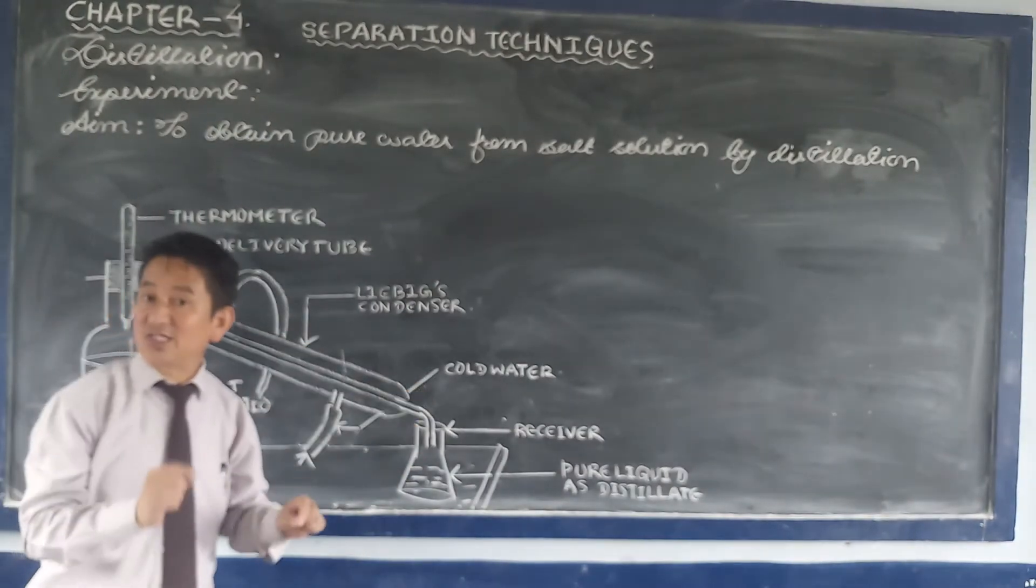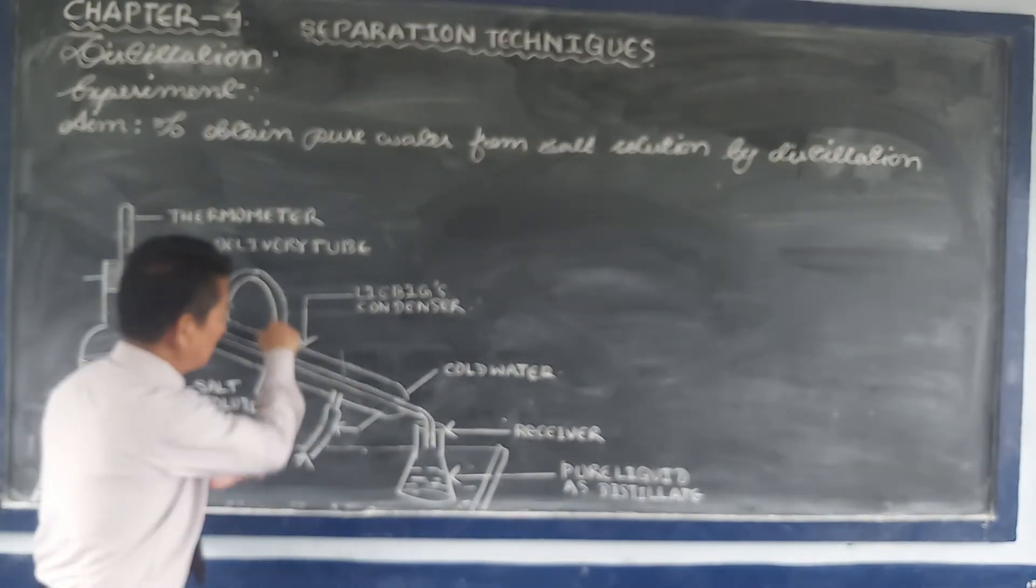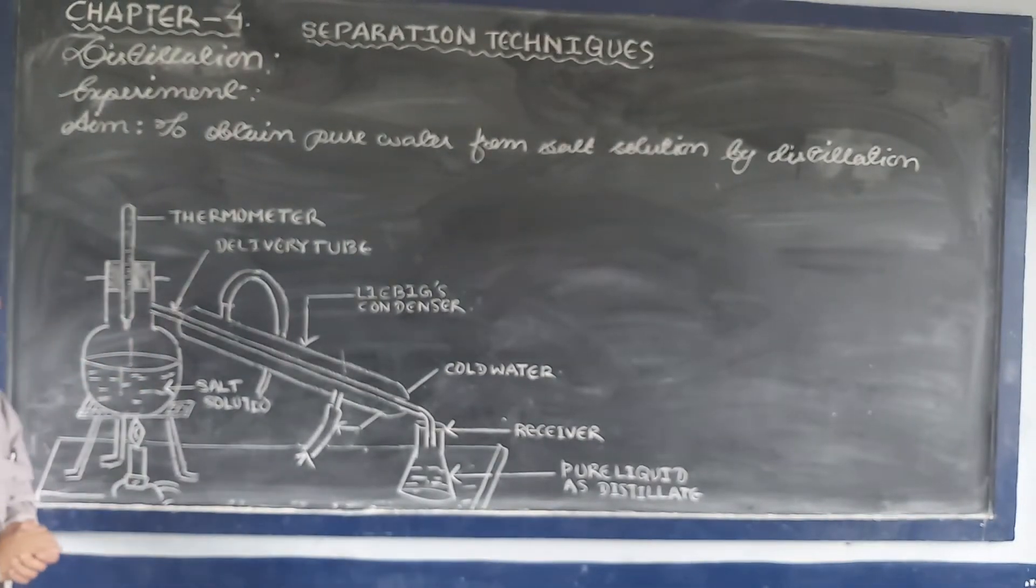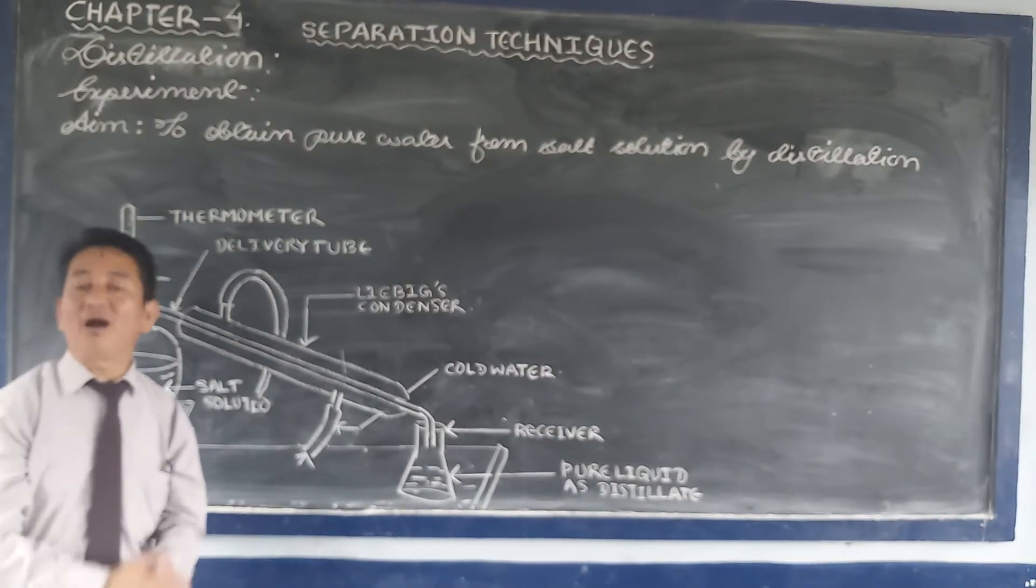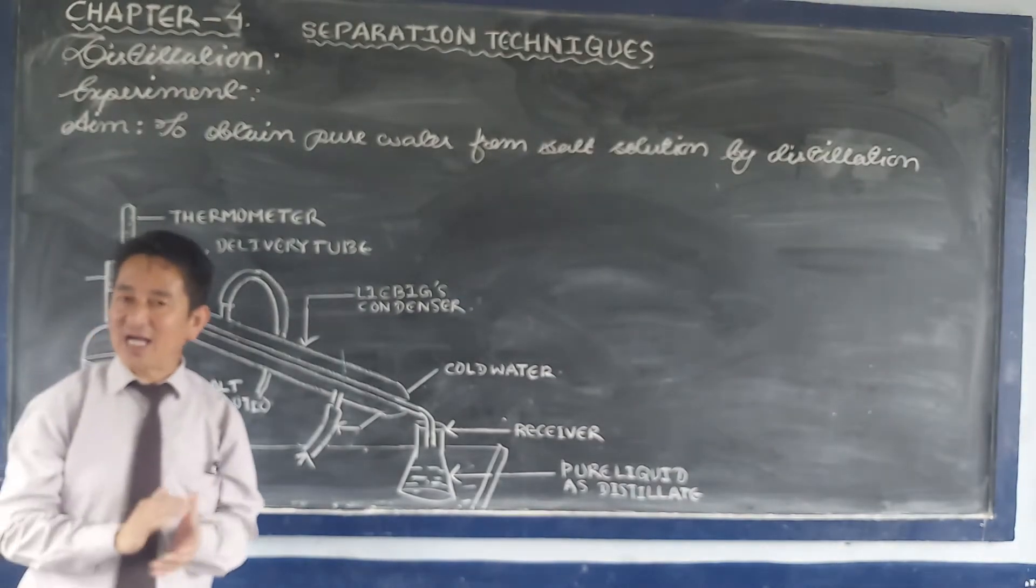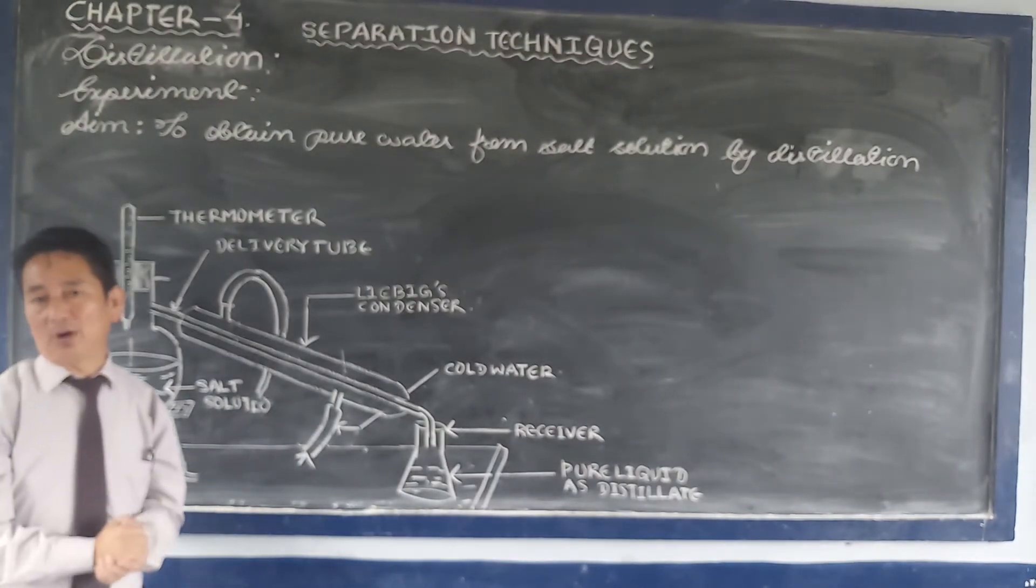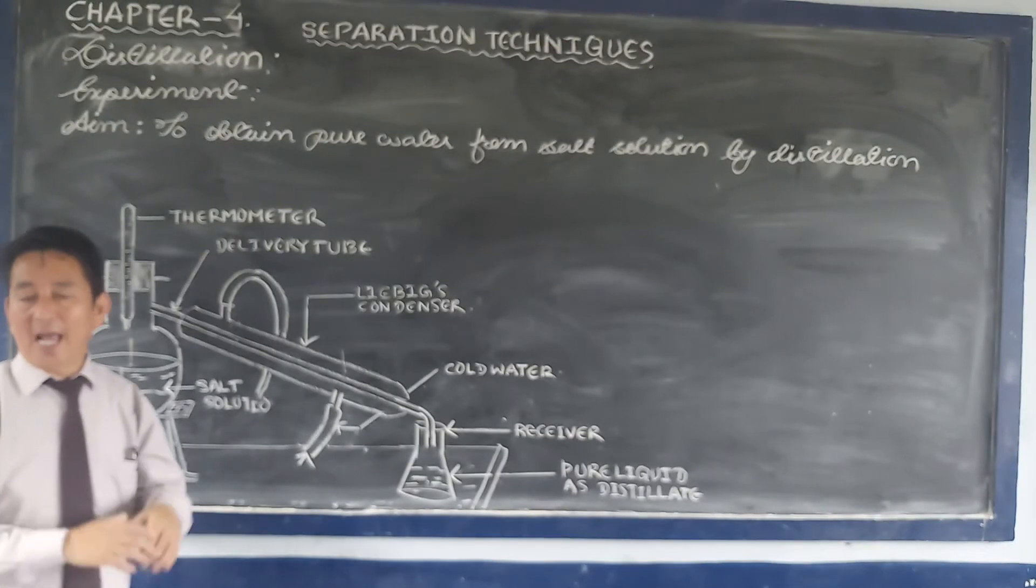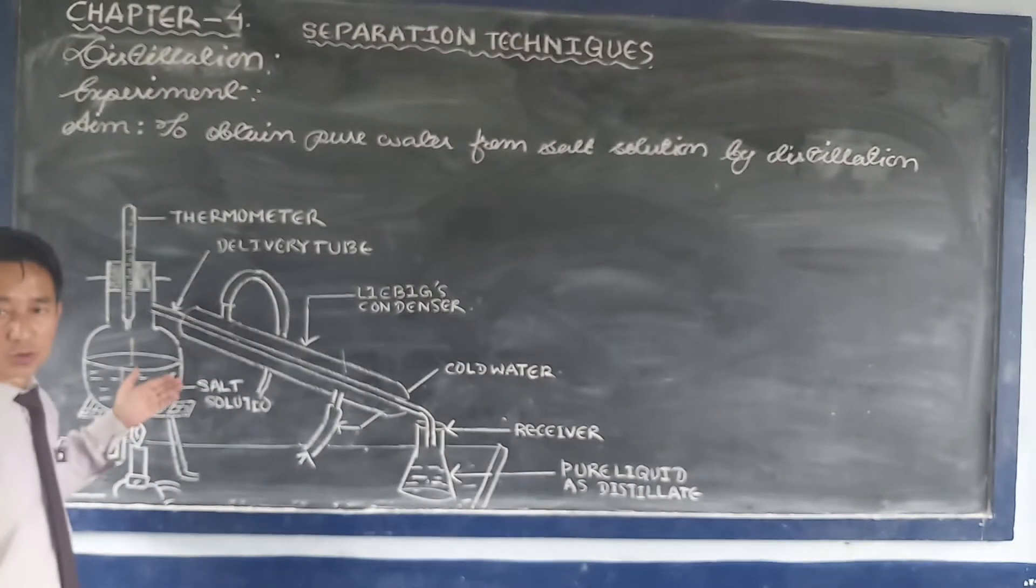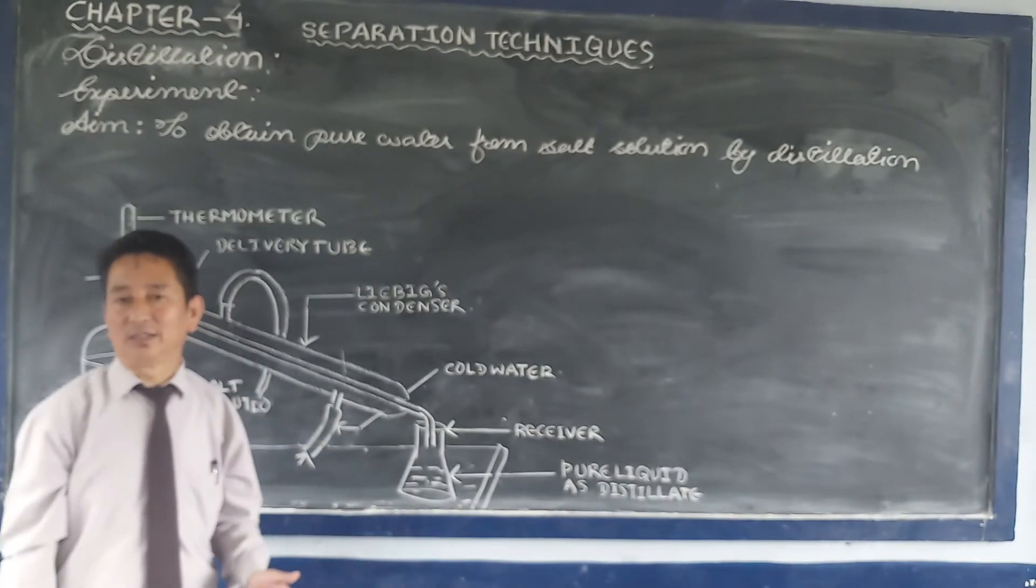The condenser consists of a long tube surrounded by an outer tube through which water can be circulated. Now, the process of distillation. If a liquid containing suspended impurities is taken in a distillation flask, on heating, the liquid changes into vapor. Then it changes back into liquid when it passes through the condenser.